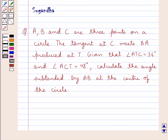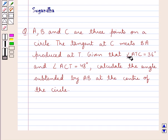Hello and welcome to the session. In this session we discuss the following question: A, B and C are three points on a circle. The tangent at C meets B, A produced at T. Given that angle ATC is equal to 36 degrees and angle ACT is equal to 48 degrees, calculate the angle subtended by AB at the center of the circle.